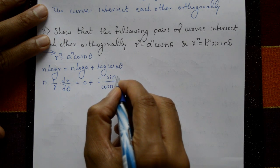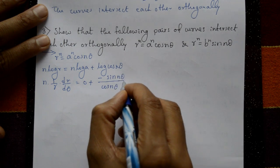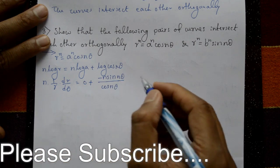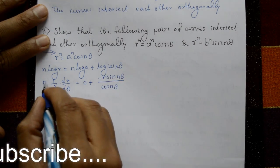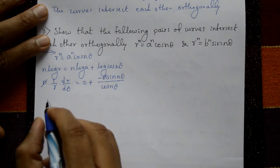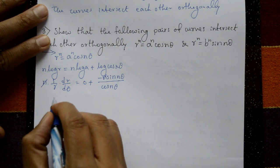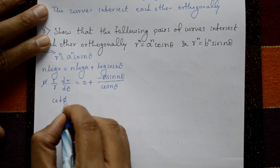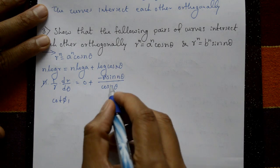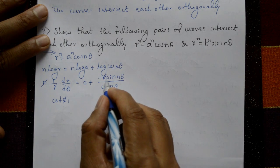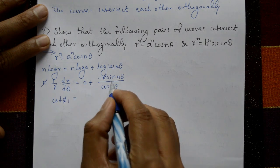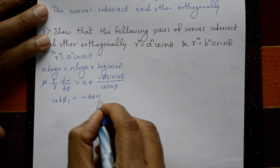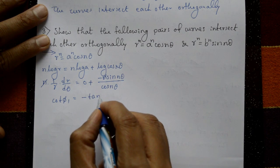Differentiating log(cos(nθ)) gives (1/cos(nθ))·(−sin(nθ))·n. Both sides cancel n, giving cot(φ₁) = −tan(nθ).